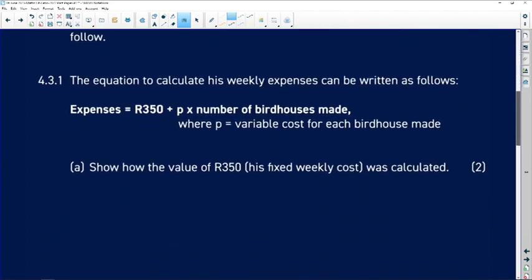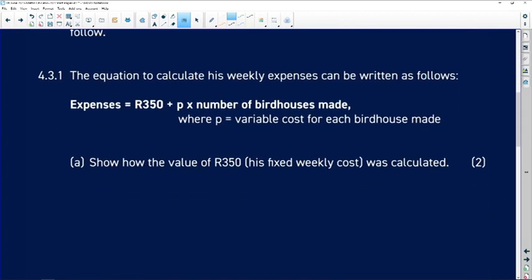The question says the equation to calculate weekly expenses can be written as: expenses = 350 plus p times number of birdhouses made, where p is the variable cost. Show how the value of 350 in the fixed weekly expense was calculated.